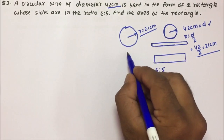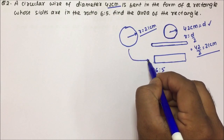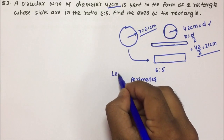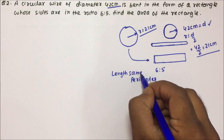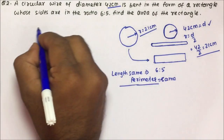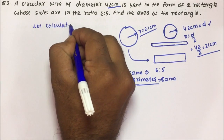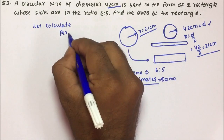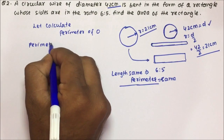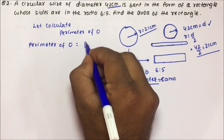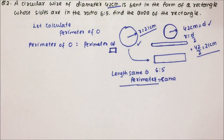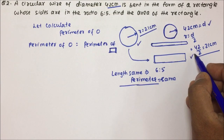If a circular wire is converted into a rectangle, what will be the same? The length will be the same — that means the perimeter is the same. The perimeter of the circle will equal the perimeter of the rectangle because the length of the wire will not change. So if you are converting a circular wire into a rectangular wire, the length of the wire will not change.